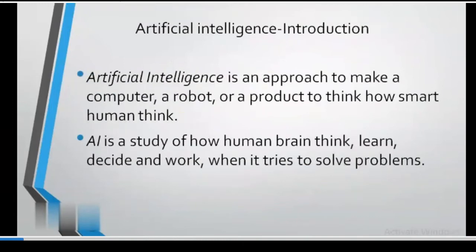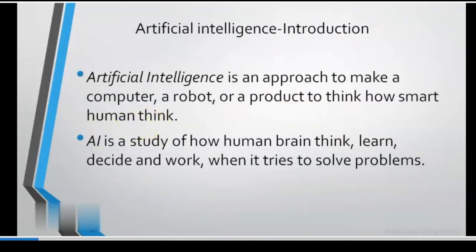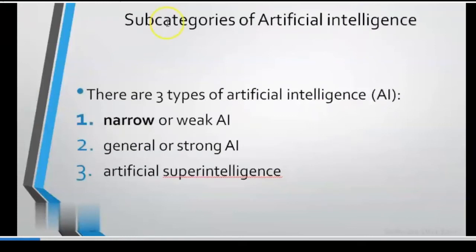As an introductory part, we can say Artificial Intelligence is an approach to make a computer, a robot, or a product think how smart humans think. Just like when we have an issue, we think over the problem to solve it — similarly, we are training a computer to think like us. The subcategories of Artificial Intelligence are Narrow, General, and Artificial Super Intelligence.